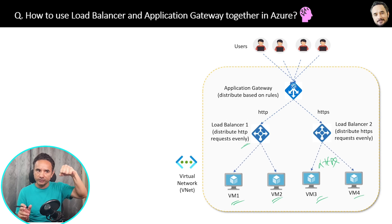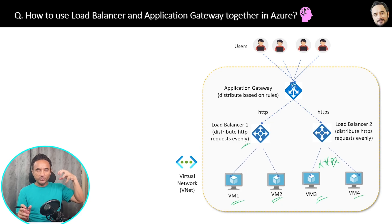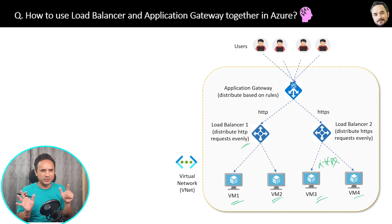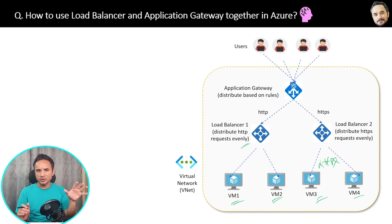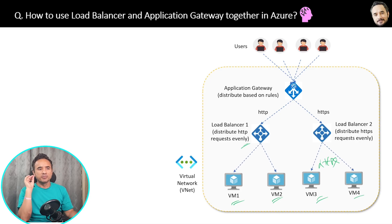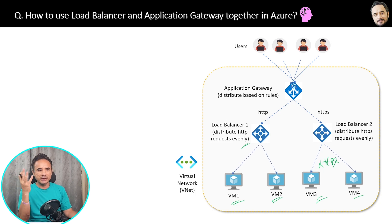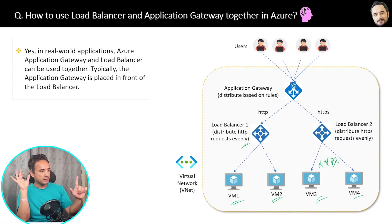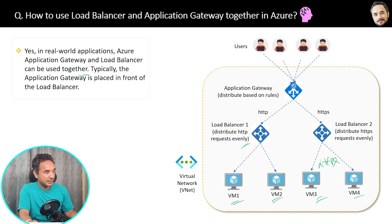This is how Application Gateway (first) and Load Balancer (next) work together in a real Azure setup. You cannot put the Load Balancer first because it will not check HTTP vs HTTPS — it will just evenly distribute, which is not ideal. For small applications with few users, a Load Balancer is not required and would just add cost. The summarized answer: Application Gateway is typically placed in front of the Load Balancer.